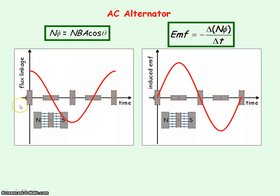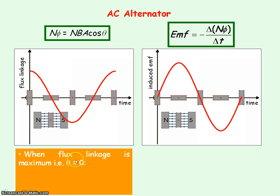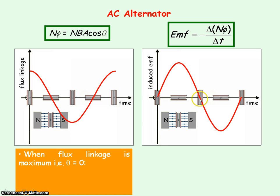The flux linkage varies with time following a cosine shape, and the induced EMF varies with time showing a sine shape. When flux linkage is maximum — that is when the plane of the coil is perpendicular to the magnetic field, theta equals zero — the induced EMF is equal to the rate of change of magnetic flux linkage, found from the gradient of a flux linkage-time graph. When flux linkage is maximum, the gradient is zero, so the rate of change of flux linkage is zero and the induced EMF is zero.